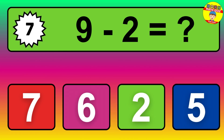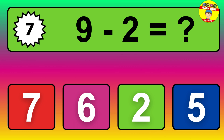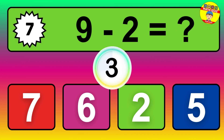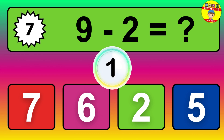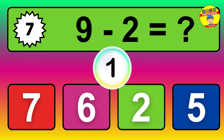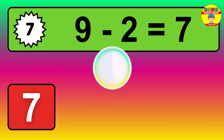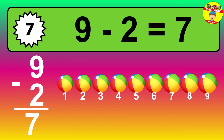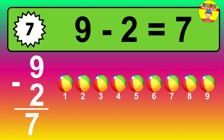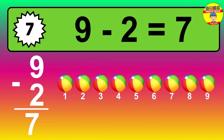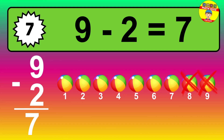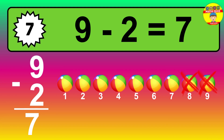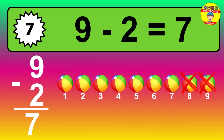Question seven: nine minus two equals what? So the answer is nine minus two is seven. Let's count it. One, two, three, four, five, six, seven.